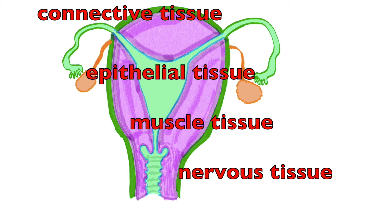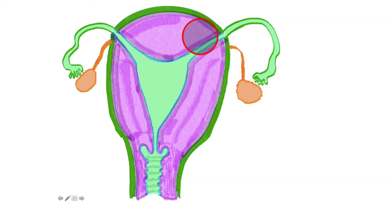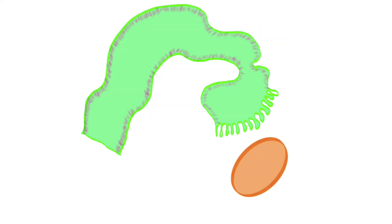Coming off the uterus superiorly are these fallopian tubes, otherwise known as uterine tubes and oviducts. If we take a closer look at that, here is a uterine tube and this is an ovary.